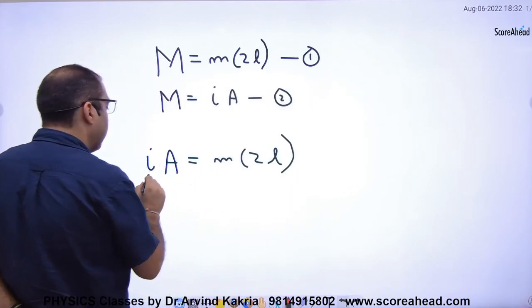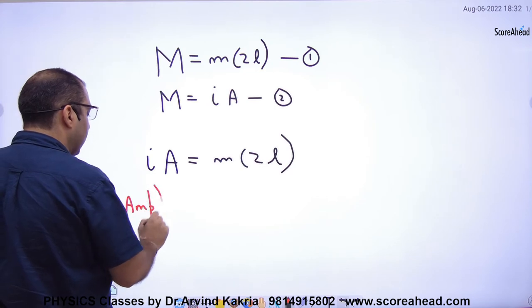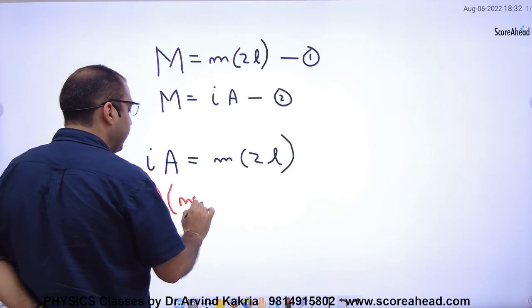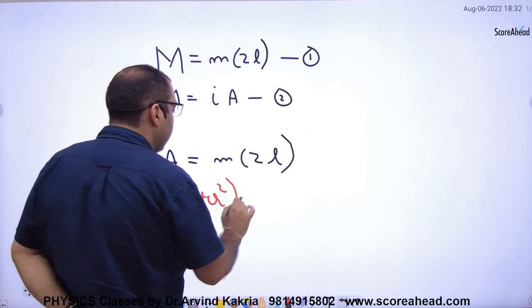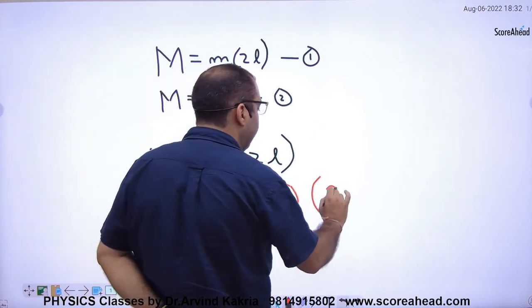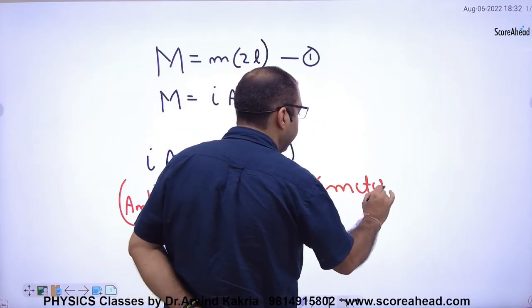So what does current mean? Ampere. What does area mean? Meter square. What does pole strength mean? Small m. And what does 2L mean again? Meter.